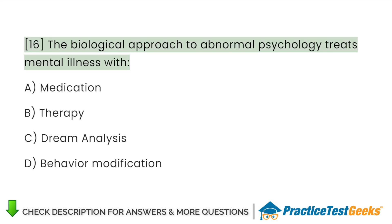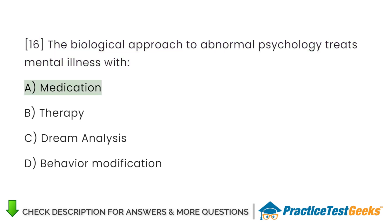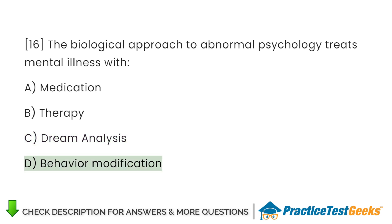The biological approach to abnormal psychology treats mental illness with: A. Medication B. Therapy C. Dream analysis D. Behavior modification